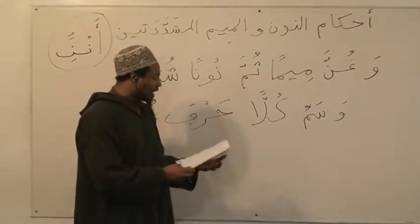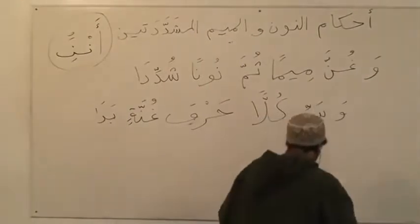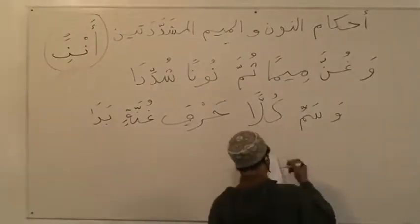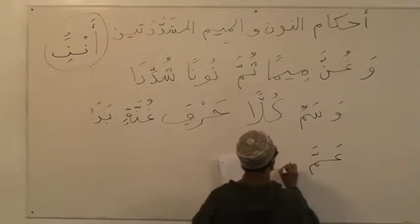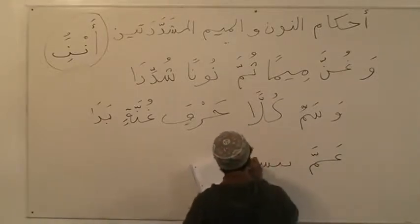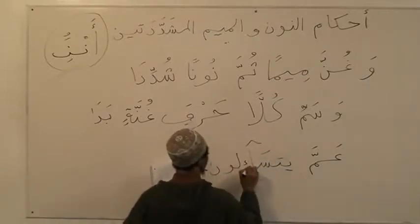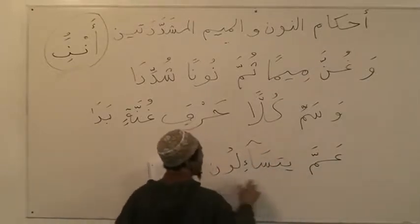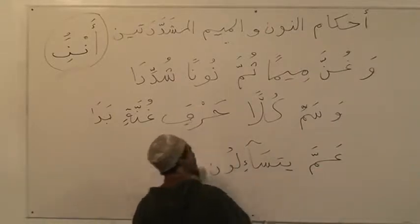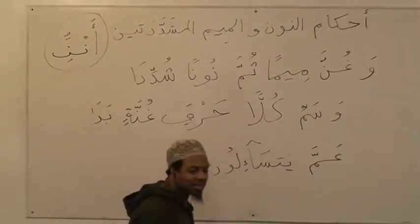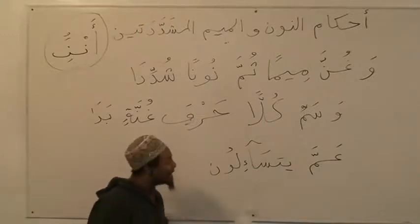We just broke the words down and we're going to give you some examples — very easy. عَمَّة — put your lips together. عَمَّة, عَمَّة, عَمَّة. Right? That's that ghunna.